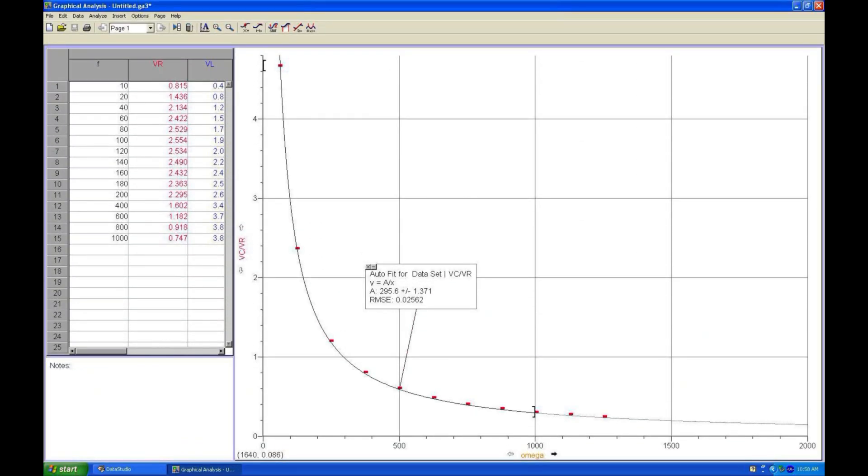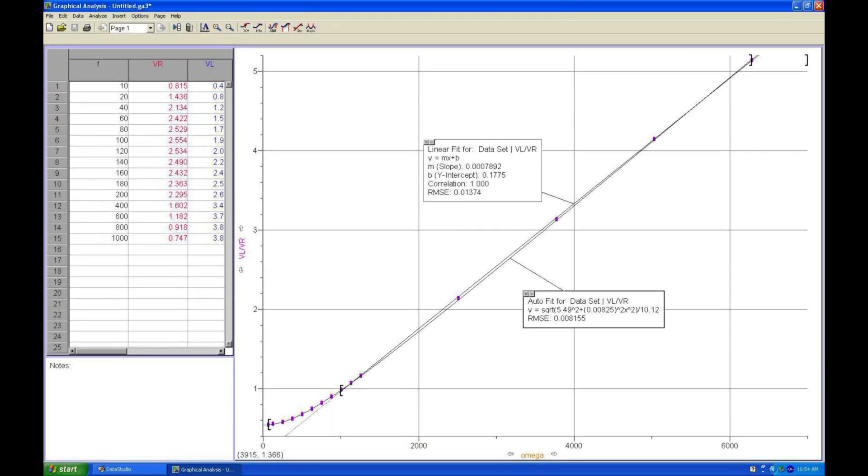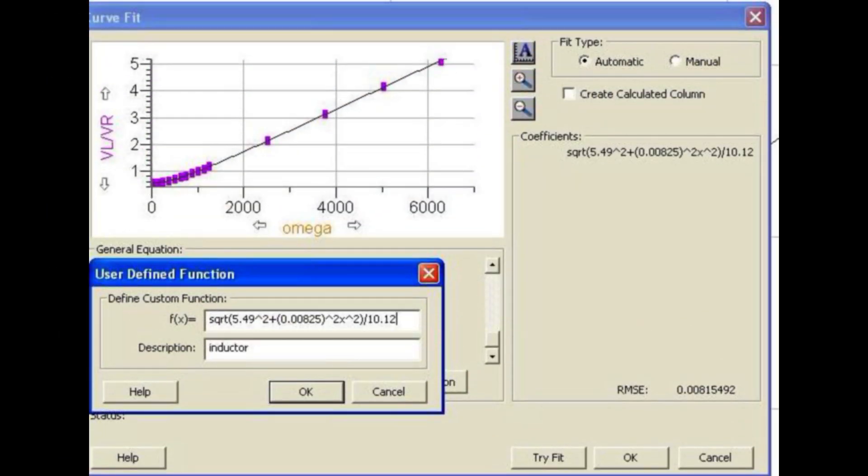A plot of capacitor voltage versus frequency shows the inverse relationship. Plotting capacitor voltage versus the inverse of frequency leads to a linear relationship with a slope given by 1 over RC. The inductor voltage is linear at high frequencies but varies from linear at low frequencies because of its internal resistance. You can plot the more complex function representing the voltage across the inductor by defining a function and using the actual numerical values for resistances and inductance.